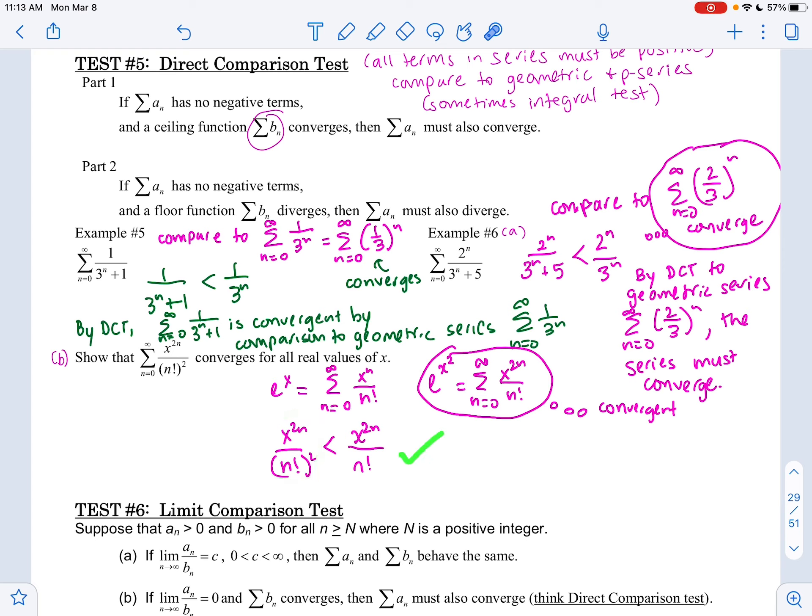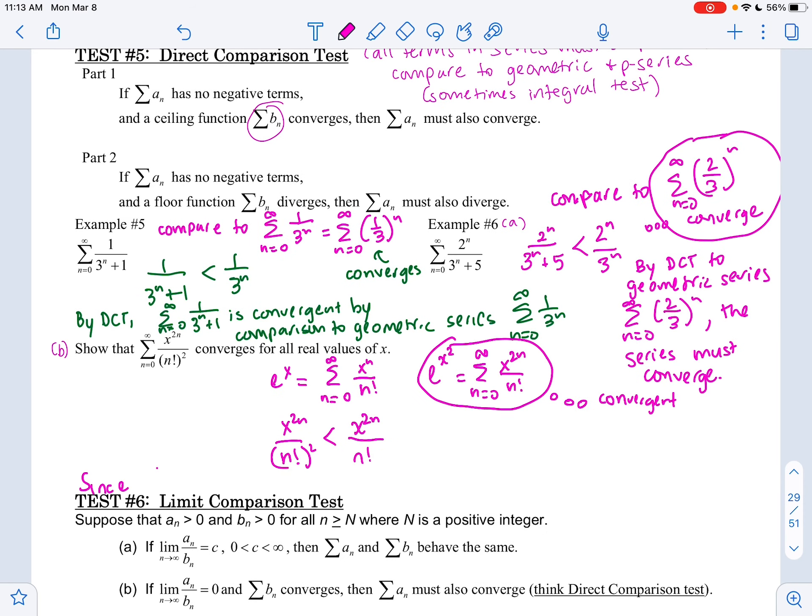So since we'll say since the function that we're comparing to, the series that we're comparing to x squared to the nth power, x to the 2n over n factorial, converges for all real numbers of x, so too does the series from n equals 0 to infinity of x to the 2n power or x squared to the nth over n factorial squared.